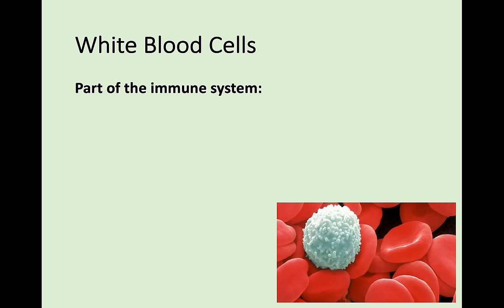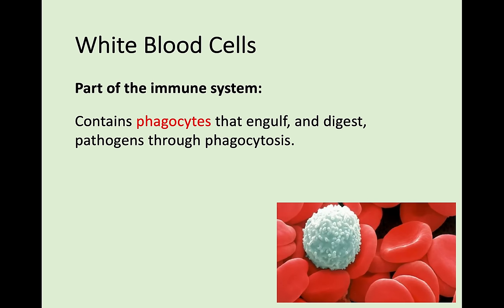Moving on to white blood cells - you've probably heard that they're important for your immune system. White blood cells have phagocytes. What phagocytes do is engulf and digest pathogens through a process called phagocytosis. A pathogen is anything that can cause a disease - bacteria and microorganisms that cause damage to your body. Phagocytes find these pathogens, engulf and digest them - basically eat them - and in doing so destroy them, protecting your body.